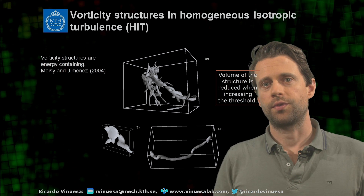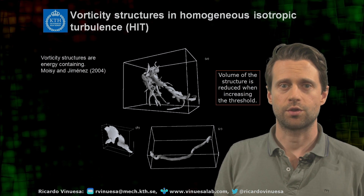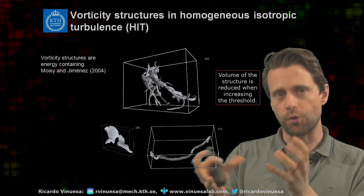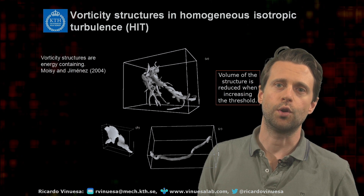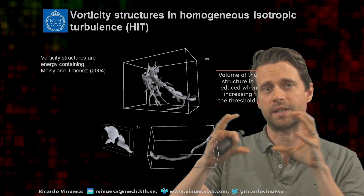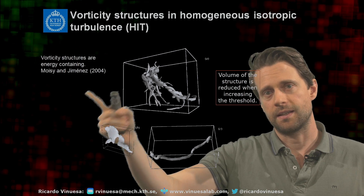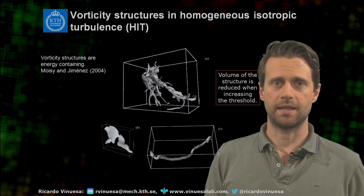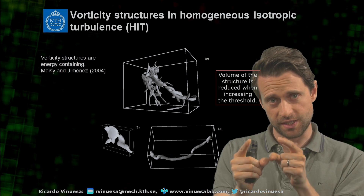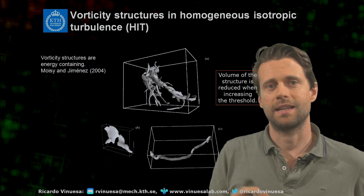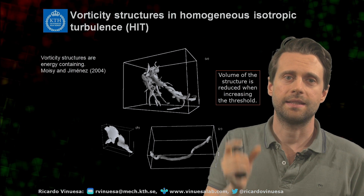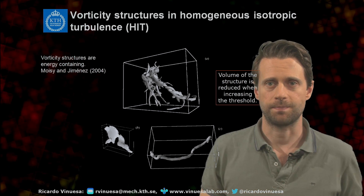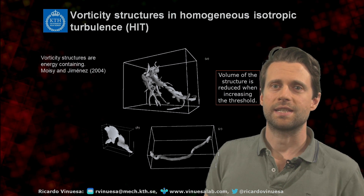Here I'm showing you some examples of vorticity extractors. These vorticity extractors are essentially containing energy. You can see their topology — they're actually quite corrugated, kind of like worms, if you wish. It's important to note that these extractors get smaller as the threshold gets higher. So typically the condition used to identify these extractors is the RMS of the vorticity. We will consider coherent extractors as the regions of instantaneous vorticity that are much larger than the RMS of the vorticity. If that threshold is made higher, the extractors will be smaller, because a smaller region of the domain will satisfy that condition. This is classical work by Moisy and Jimenez from 2004.